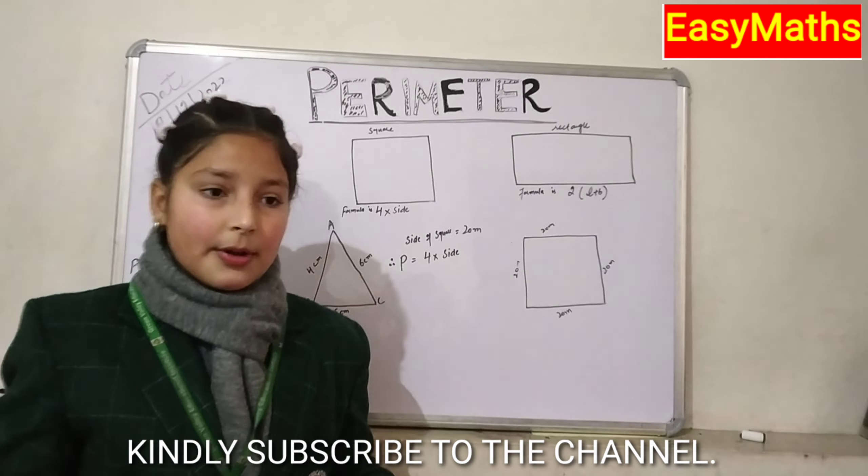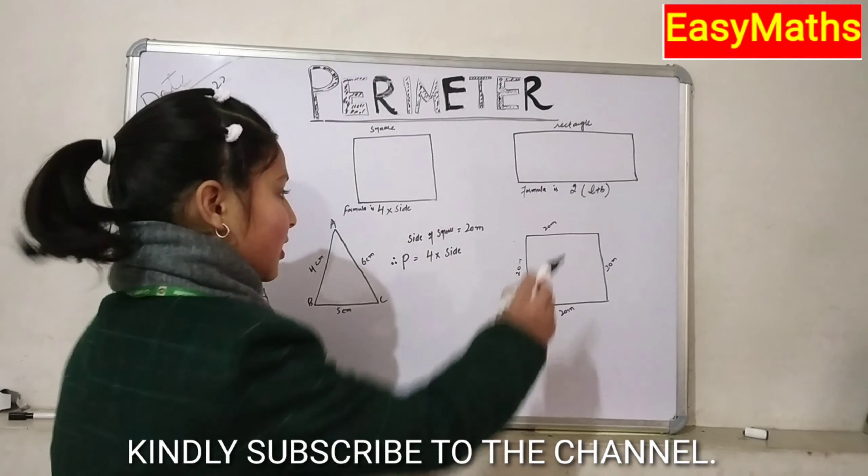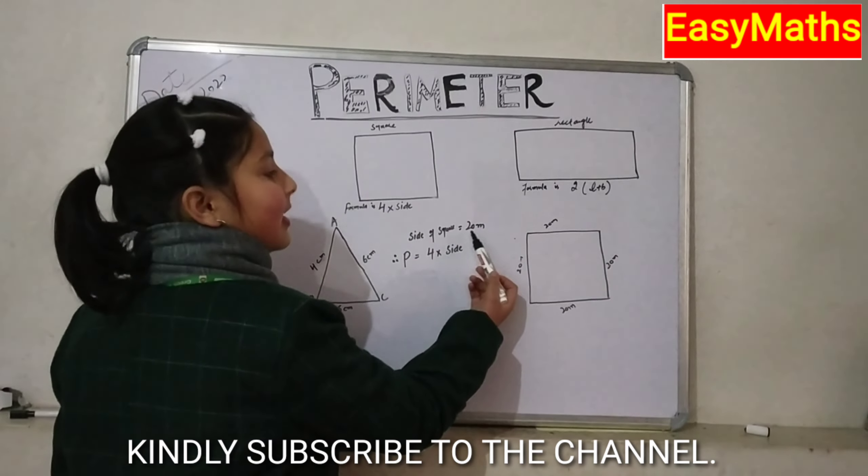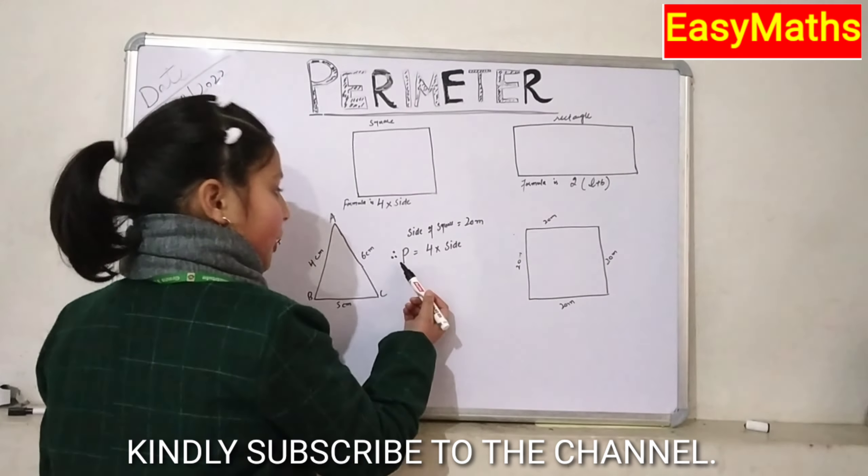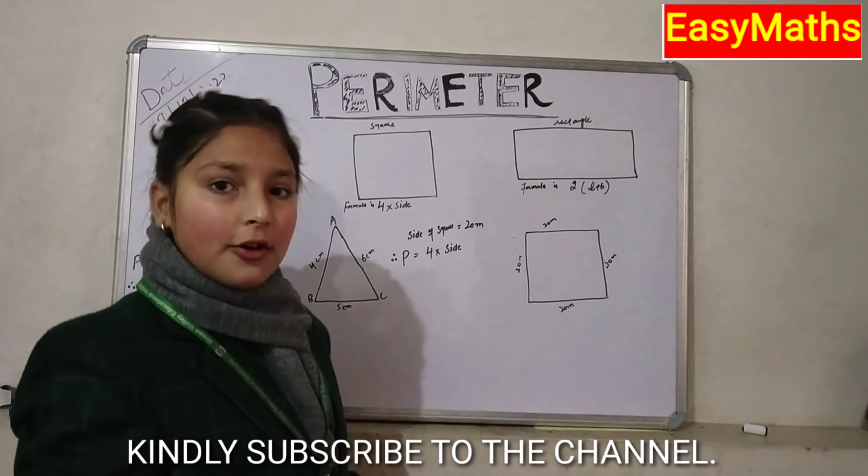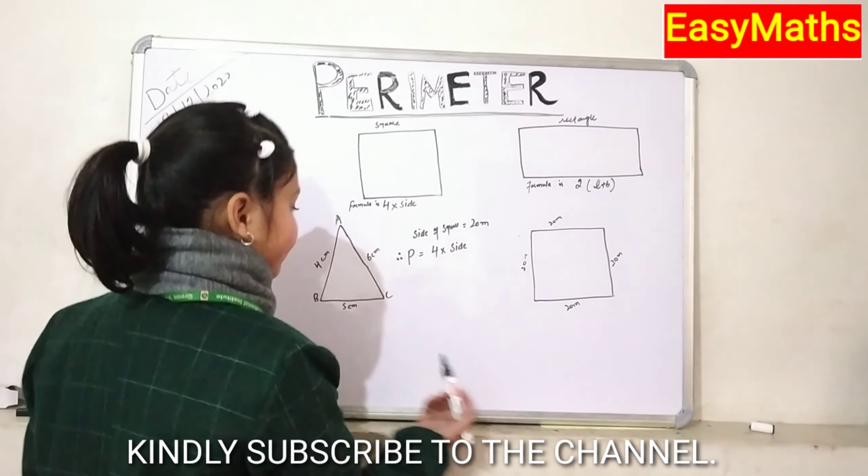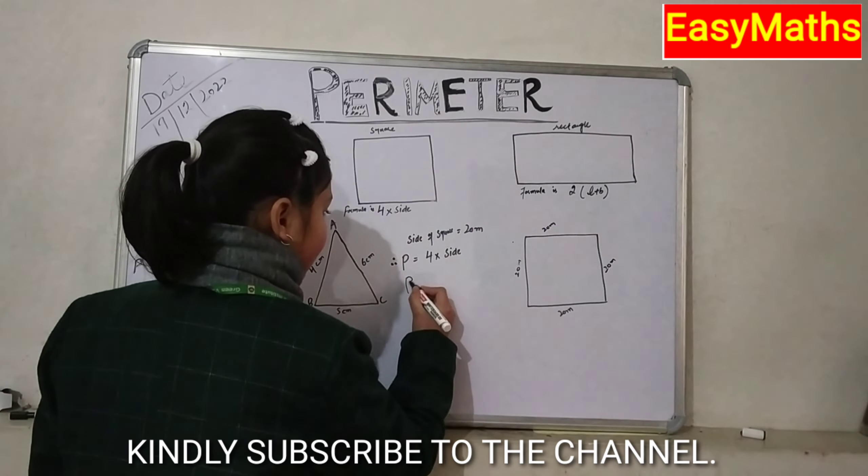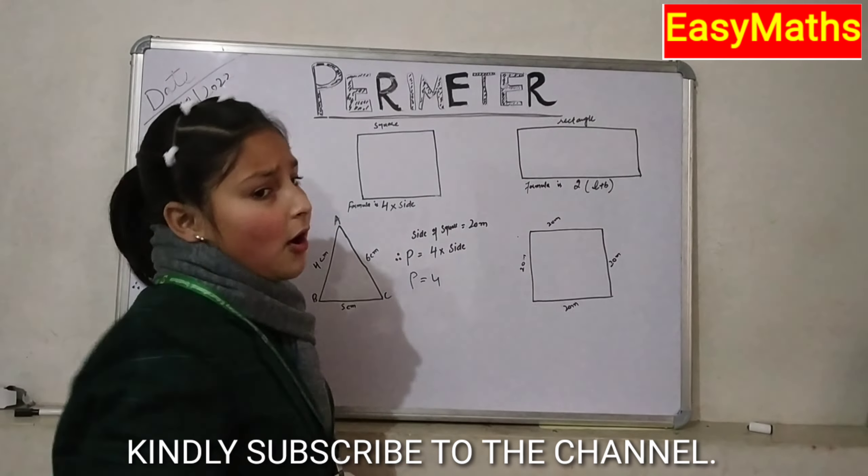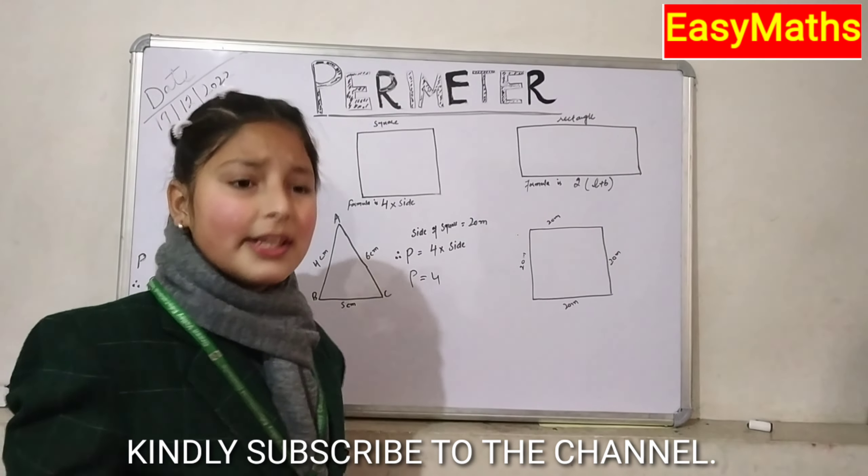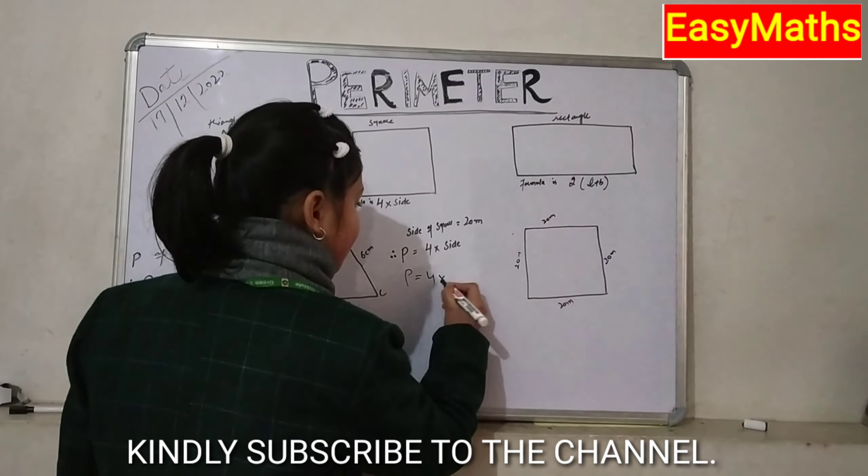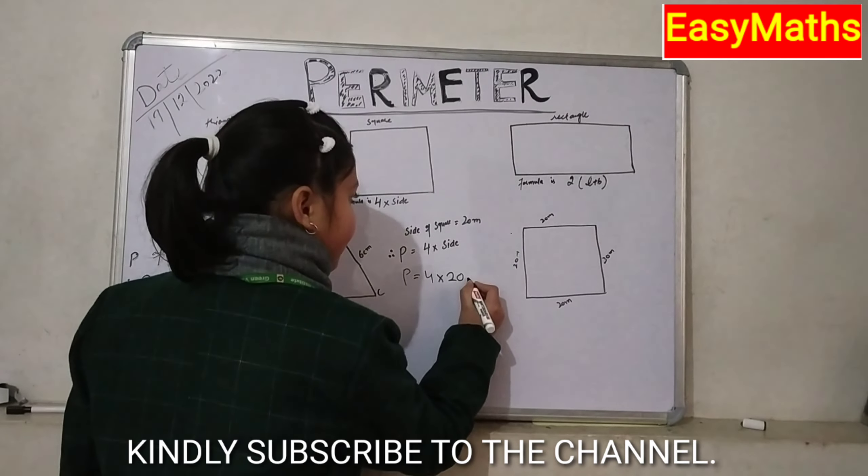Now, I will give you another example of a square. Side of square is equal to 20 meters. Therefore, perimeter is equal to 4 multiplied by side. Perimeter is equal to, as we already know all the sides of a square are equal, 4 multiplied by 20 meters.